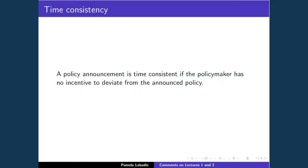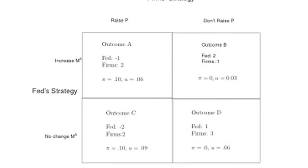That strategic interdependence leads to what's called a time consistency problem. A policy announcement is time consistent if the policymaker has no incentive to deviate from the announced policy. I'm going to argue that one reason we had two severe recessions in the early 1980s is that Volcker announced he would lower inflation, people didn't believe him, and to break that inflationary expectation cycle we had to experience those two difficult recessions in order to build credibility for the Federal Reserve. I'll illustrate this with a game.